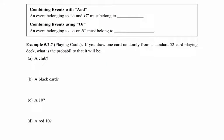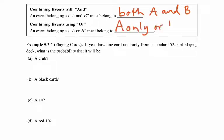Combining events. When you see the word 'and,' an event belonging to A and B means it must belong to both A and B. If you see the word 'or,' that's a bit different — it means the event could belong to A only, B only, or it could belong to both. So there's a little bit more to consider when you see the word 'or.'